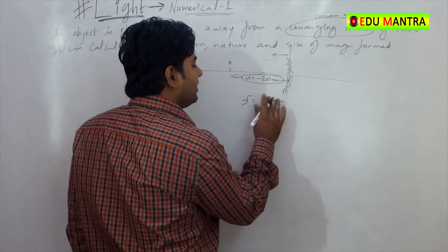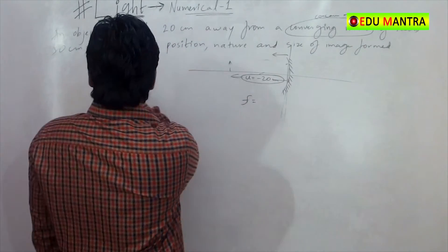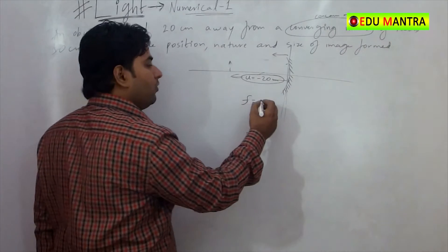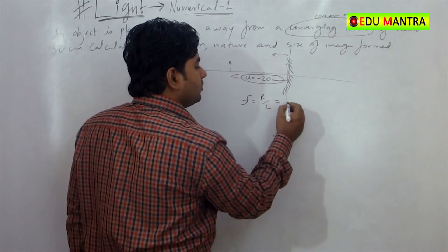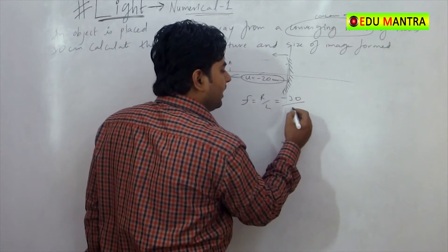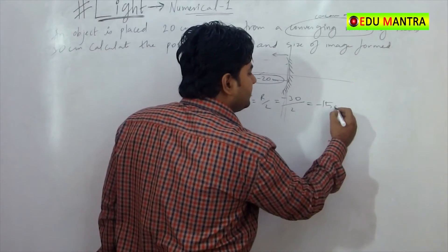Yes, that will be negative. So r is minus 30 cm. So, what is f? R by 2 is f. So, it will be minus 30 by 2. That is minus 15 cm.